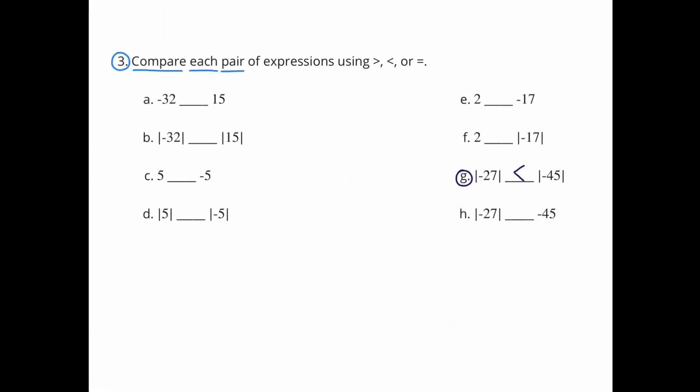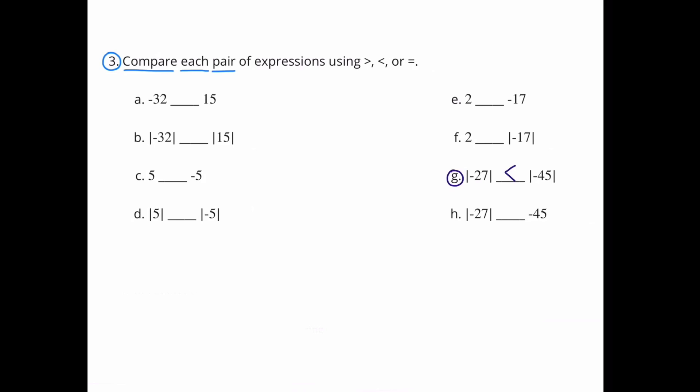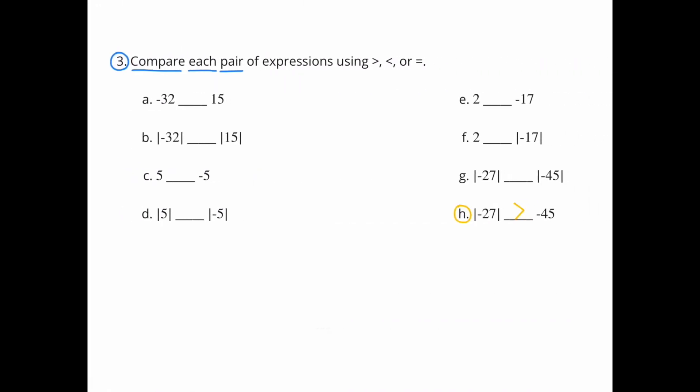G: The absolute value of negative 27 is less than the absolute value of negative 45. H: The absolute value of negative 27 is greater than negative 45.